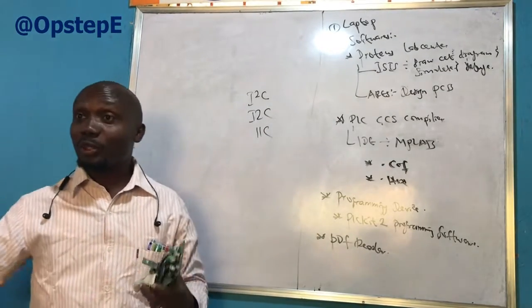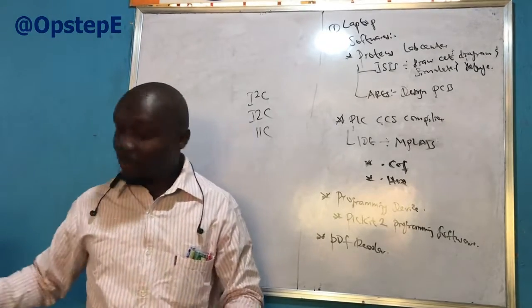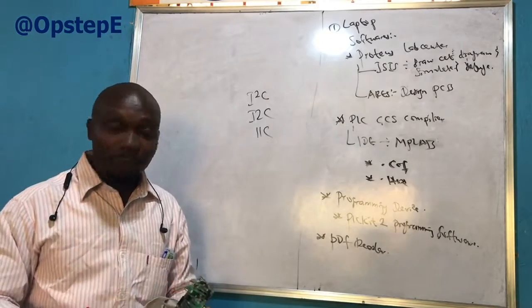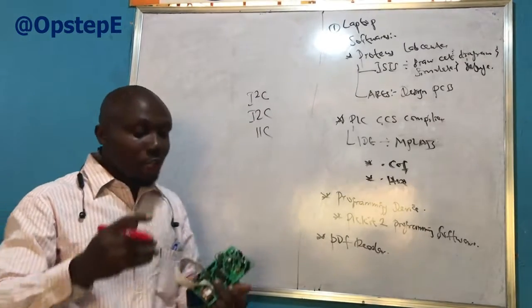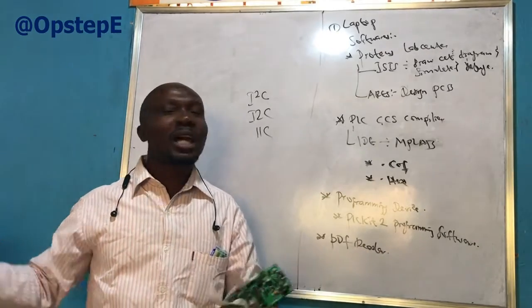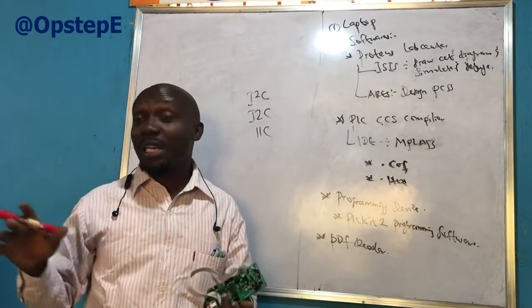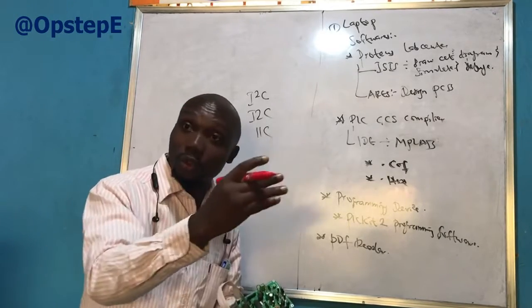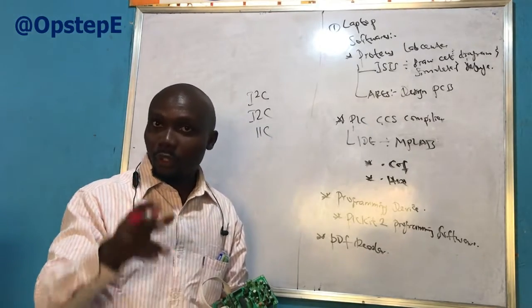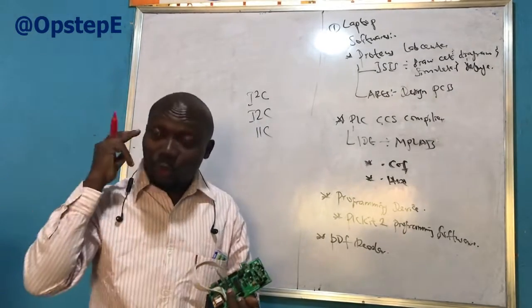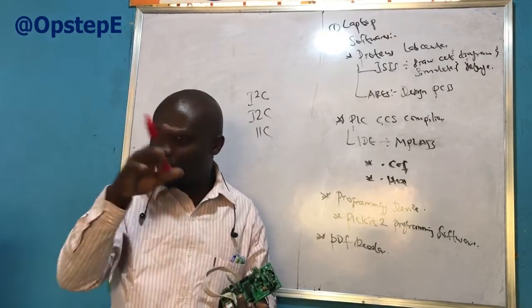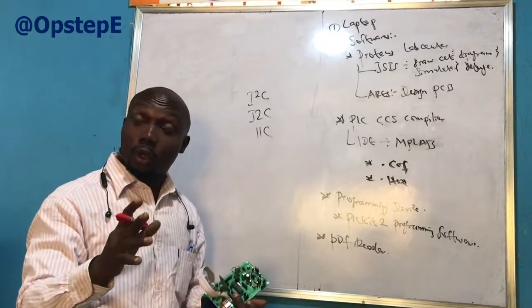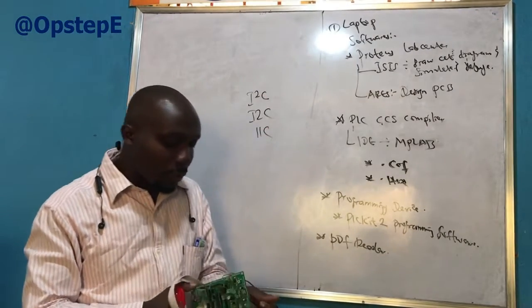The good thing about I2C is that each of those modules have addresses. So you can have more than one, more than two, you can have as many as possible on the same bus, communicating with the same microcontroller using the same pin. If you need to communicate with me using the same ear, you are also reduced to communicating with me. Does it make sense? So that's an advantage to have the board with the I2C communication boards or data boards.